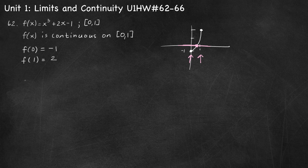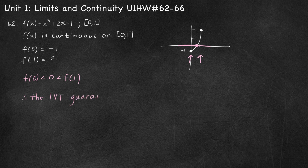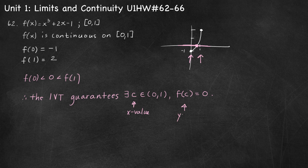Since f is continuous on the interval from 0 to 1, and 0 is in between f of 0 and f of 1, the intermediate value theorem guarantees that there exists some value c — an x-coordinate — on the open interval from 0 to 1, such that f of c equals 0. Here c is the x-value and f of c is the corresponding y-value.